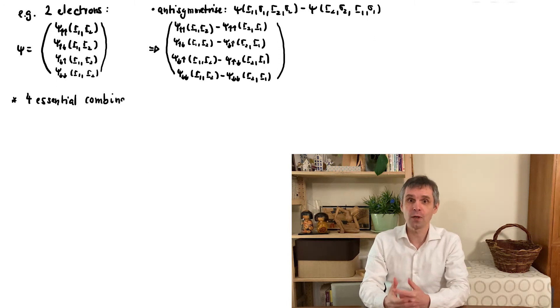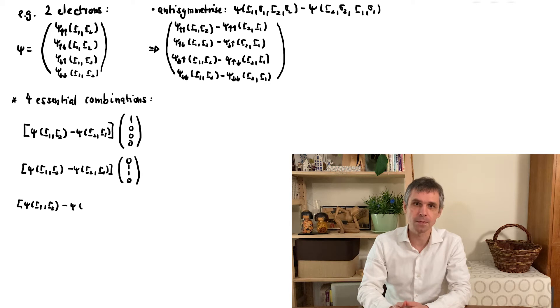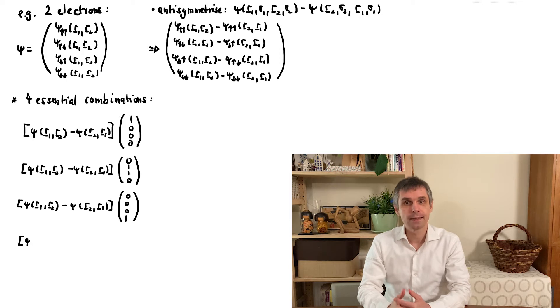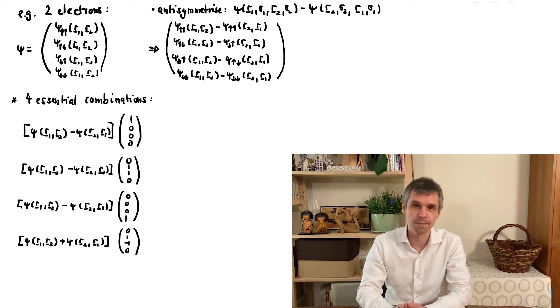Next we would like to understand how these states look like. I write down four essential combinations. Three of these are antisymmetric under the exchange of the positions but symmetric under the exchange of the spins if we do so separately. They all turn out to have an overall spin of 1, which is why we find three such states, and we call them spin triplet states.